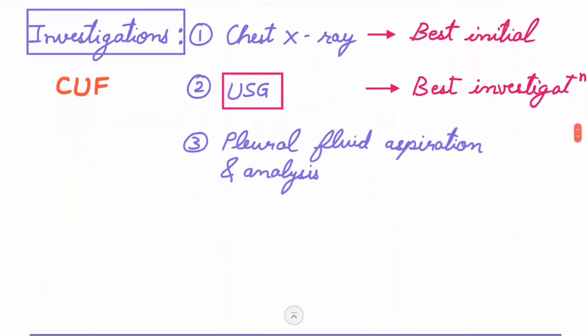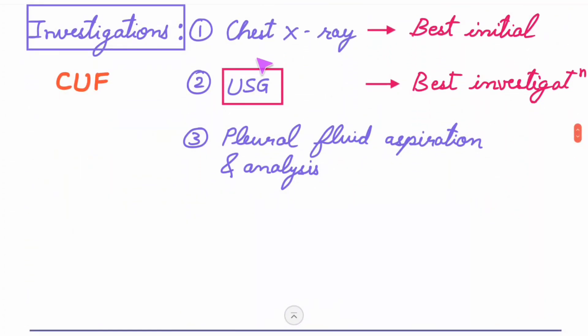Now investigations: chest x-ray is the best initial investigation, USG is the best investigation of all, and third is pleural fluid aspiration and analysis. You can remember this by CUF or CUP.